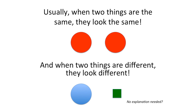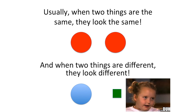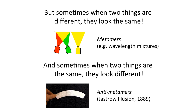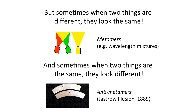Usually when two things are the same, they look the same. And when two things are different, they look different — no explanation necessary. Well, sometimes when two things are different, they actually look the same. In perception, we call these metamers — things like wavelength or color mixtures, where you can mix two colors to look like another color.